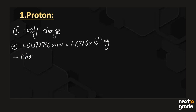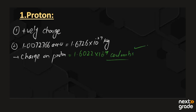The charge on a proton — how much positive charge does a proton have? That is almost 1.6022 × 10⁻¹⁹ coulombs, and we take it with the positive sign.